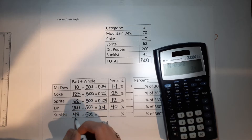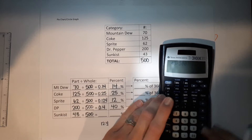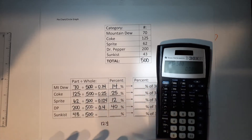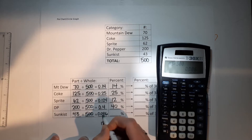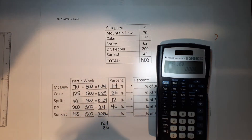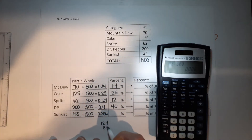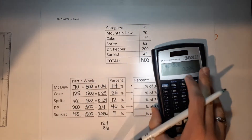Last one: Sunkissed — my husband loves orange soda so I had to throw it in for him. 43 was the part, 500 is the whole. 43 divided by 500 gives 0.086. Move that over twice and I get 8.6, which rounds up to 9%.